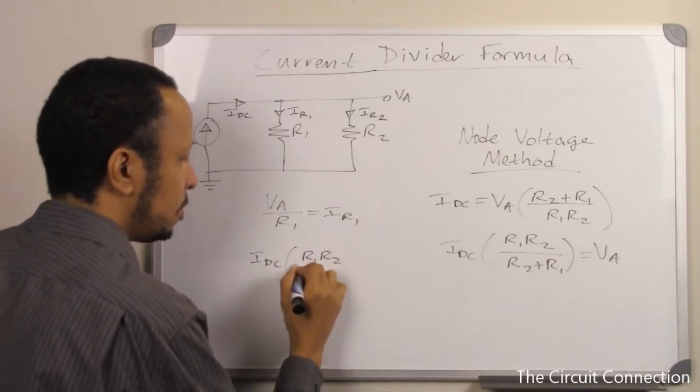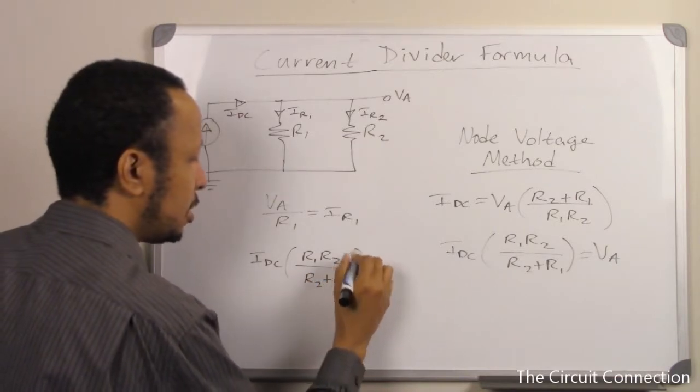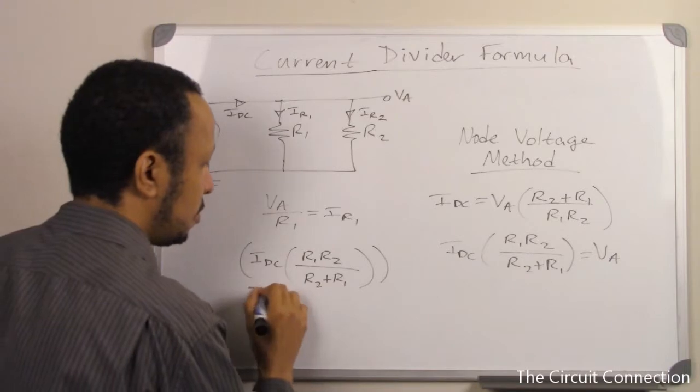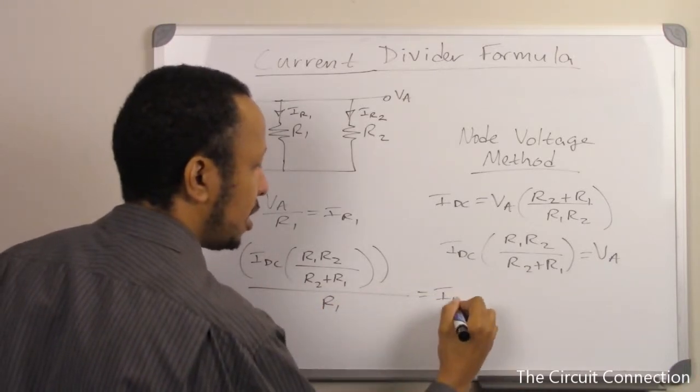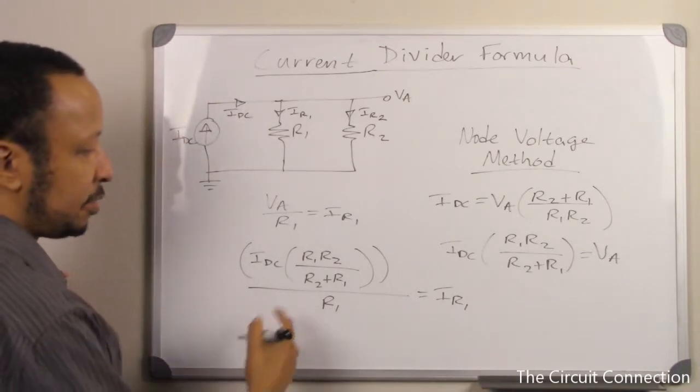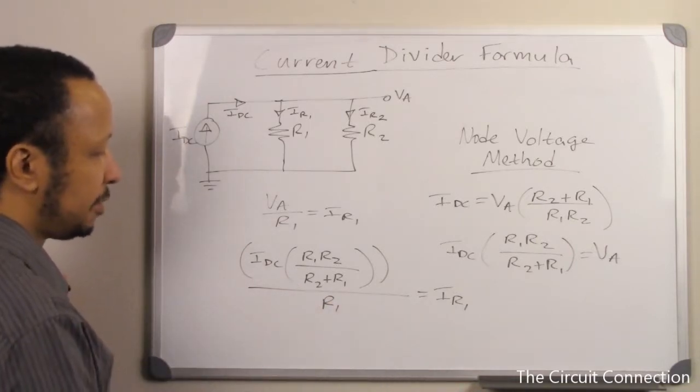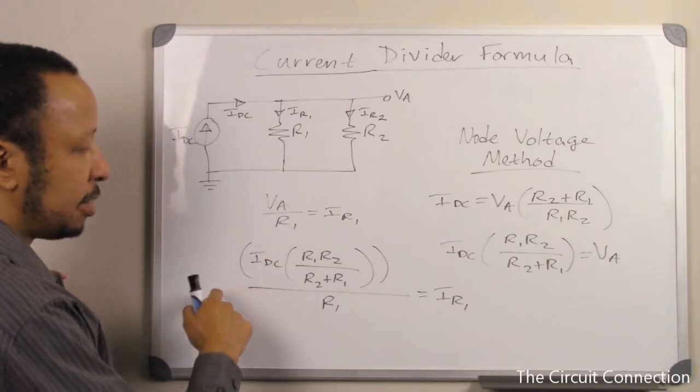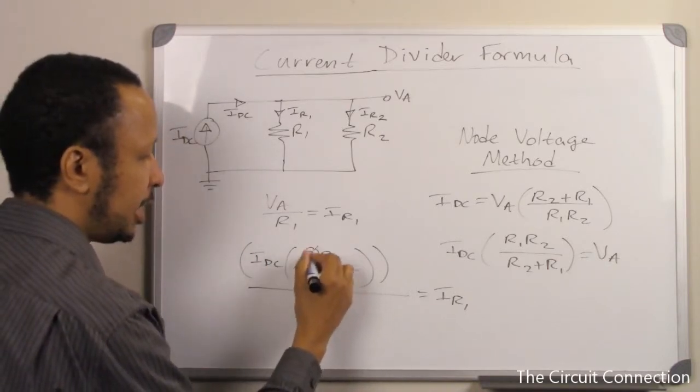All of that over R1, which will give us IR1. Next, we'll take notice of the fact that by dividing it over R1, is the equivalent to multiplying it by 1 over R1. So, that means that R1 will effectively cancel out.